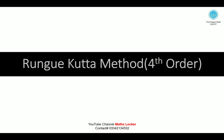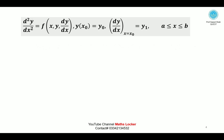Bismillahirrahmanirrahim. Runge-Kutta Method, 4th Order. d²y/dx² = f(x, y, dy/dx) is a second order differential equation. The initial conditions are: y(x₀) = y₀ and dy/dx at x = x₀ equals y₁. These are initial conditions — the differential equation with initial conditions is called the initial value problem, in the small interval x between a and b.